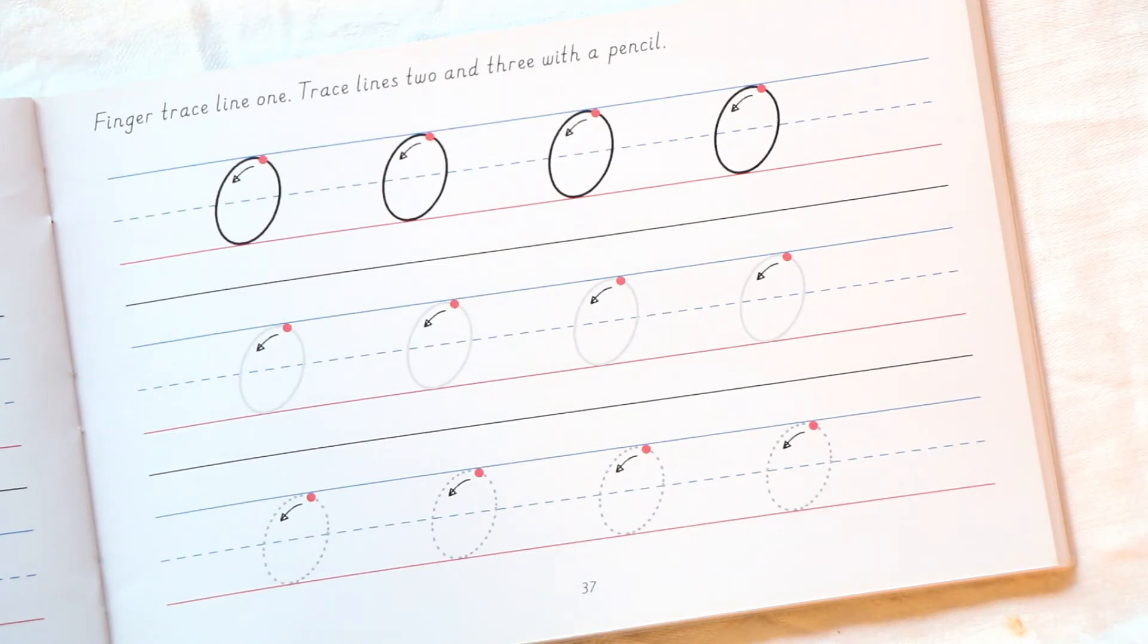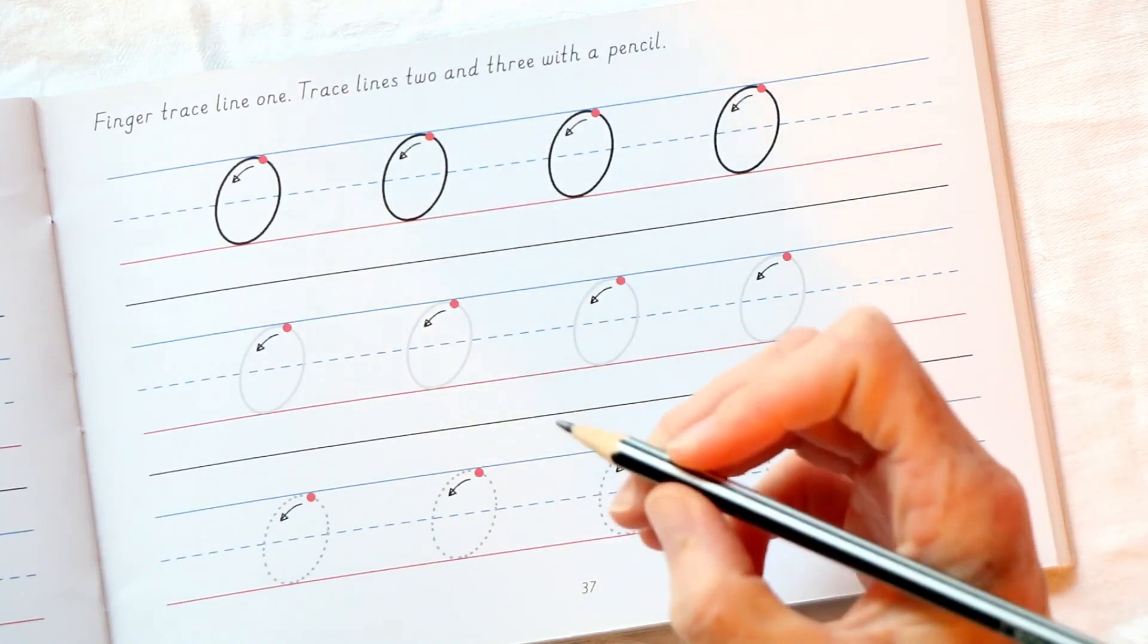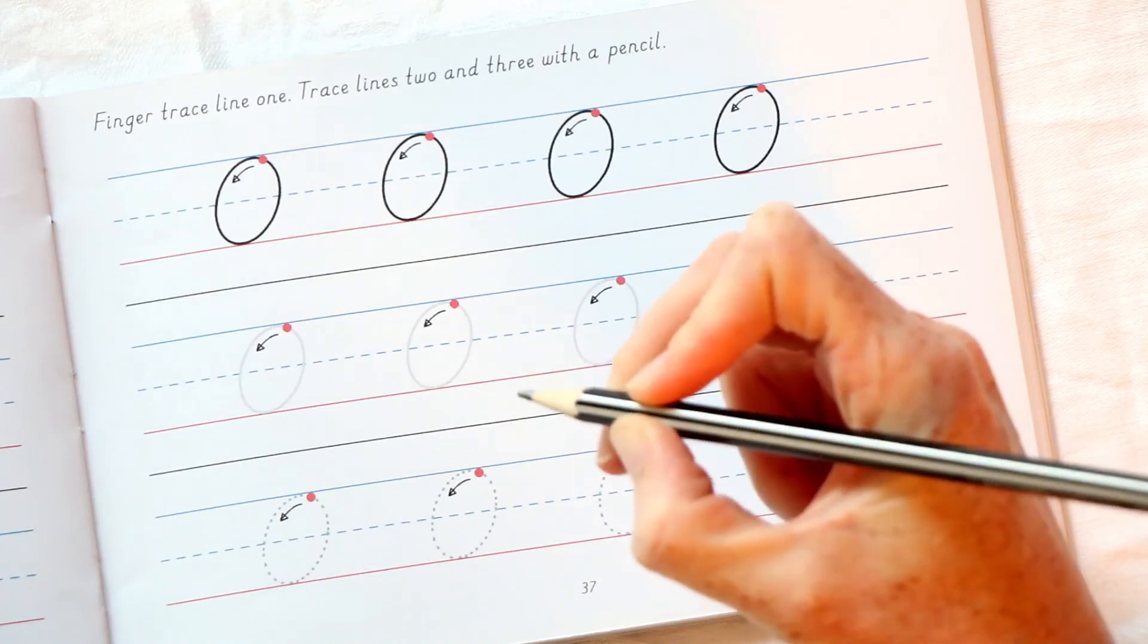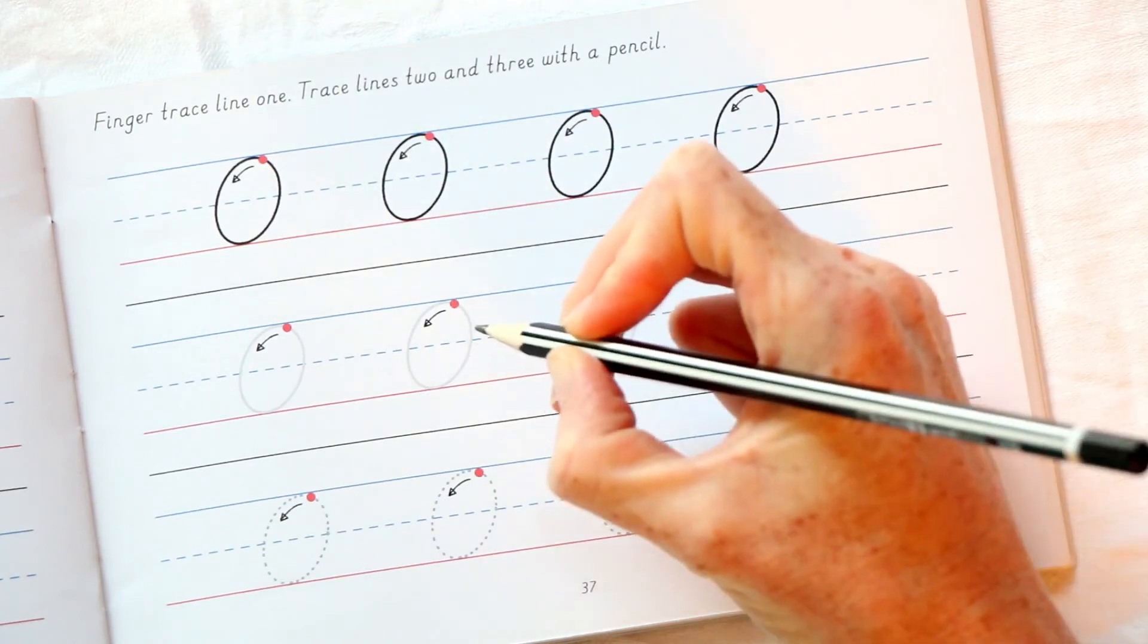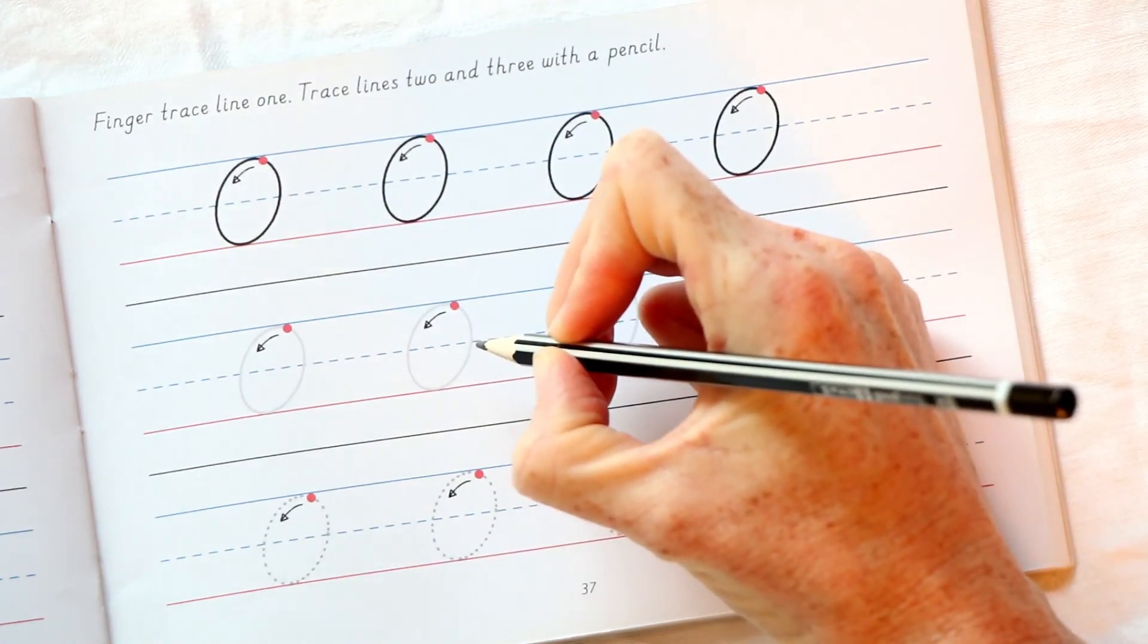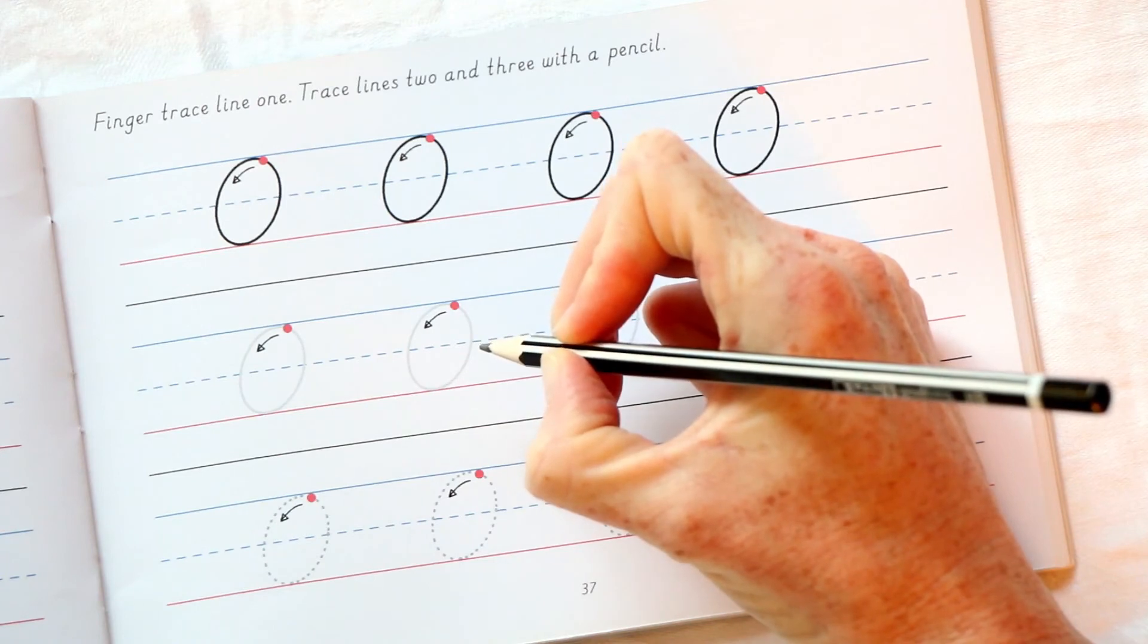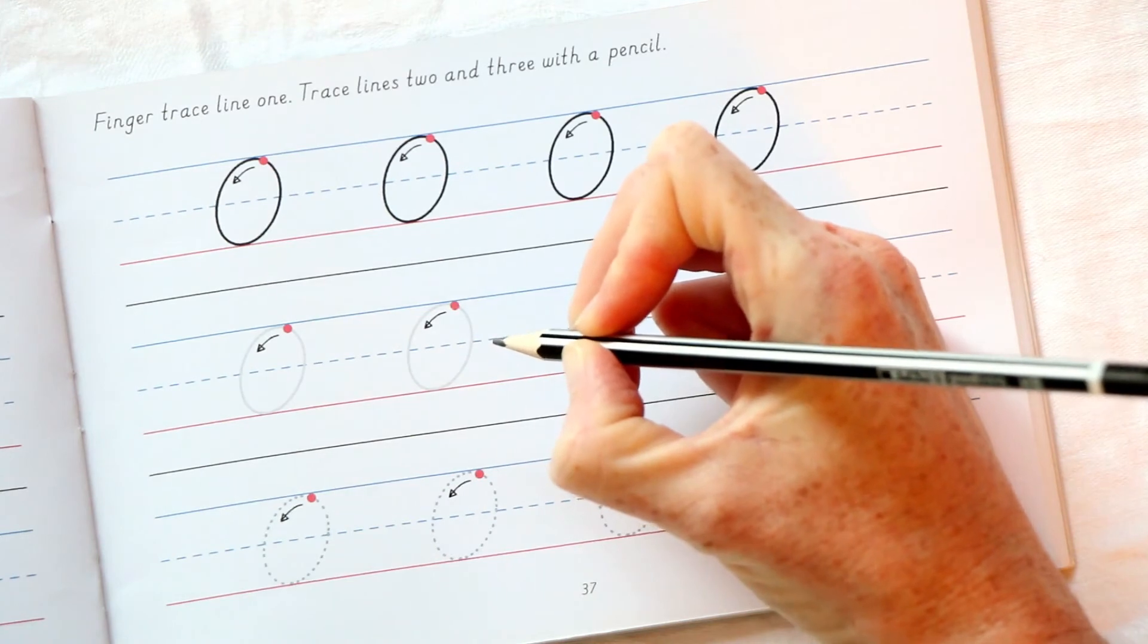Well done. Now let's take our pencil and let's do the next line. Remember to hold your pencil in a good sturdy tripod position, and your other fingers are underneath your pencil, and you are secure. Can you see the angle of my fingers? Now we are ready to start.